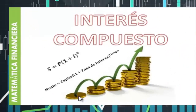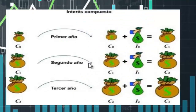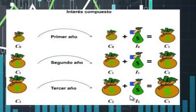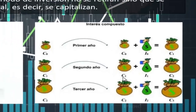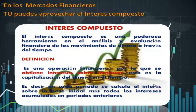Por ejemplo, podemos comenzar con una moneda, después se convierte en 3, en 6, en 9, en 18 y así va aumentando. Cuando aprovechamos el interés compuesto que nos permiten los mercados financieros — y es ahí donde tenemos la posibilidad de aprovecharlo — en un primer año tenemos el capital inicial, ganamos un cierto interés, ese capital lo utilizamos, ganamos ese interés sobre este capital, se suma, lo volvemos a utilizar en el siguiente periodo, y así sucesivamente. El interés compuesto es una poderosa herramienta en el análisis financiero: es una operación por la que se obtienen intereses sobre intereses, es decir, la capitalización del dinero en el tiempo.